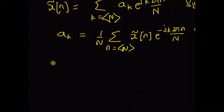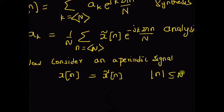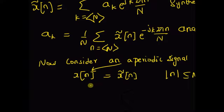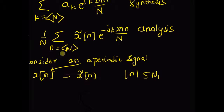Now consider an aperiodic signal x[n], which is equal to the periodic signal for values of n with |n| < N₁. That is, x[n] is equal to x̃[n] for |n| < N₁ — x[n] is basically one period of the periodic signal x̃[n]. In the analysis equation, we can replace x̃[n] with x[n], because x[n] equals 0 outside the interval |n| < N₁, which matches the summation index.